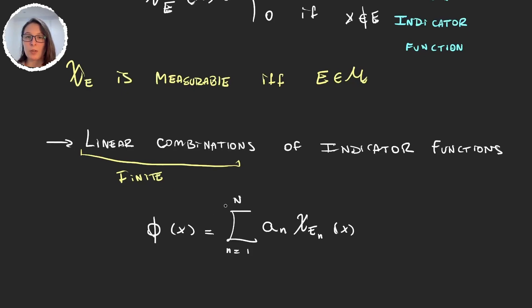The reason why we take a finite linear combination is that we don't want indicator functions to take values plus infinity or minus infinity. So we want them to always be finite, and that is obviously guaranteed when we add only a finite amount of times.